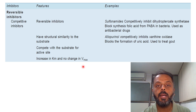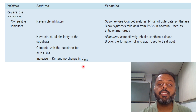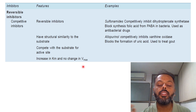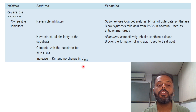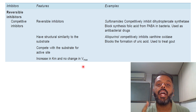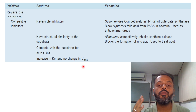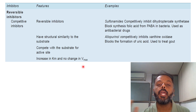One classic example is the succinate dehydrogenase enzyme, which converts succinate to fumarate in the TCA cycle, and which is inhibited by malonate. Another example involves drugs — one such drug is sulfonamide, a competitive inhibitor of dihydrofolate reductase. This results in a block in the synthesis of folic acid from para-aminobenzoic acid in bacteria, so it can be used as an antibacterial drug.